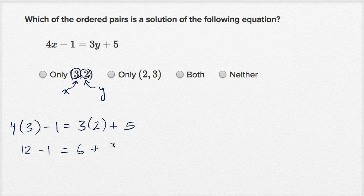Is this really the same thing as 3 times 2, which is 6 plus 5? 12 minus 1 is 11. 6 plus 5 is also 11. This is true. 11 equals 11. This pair, (3,2), does satisfy this equation.